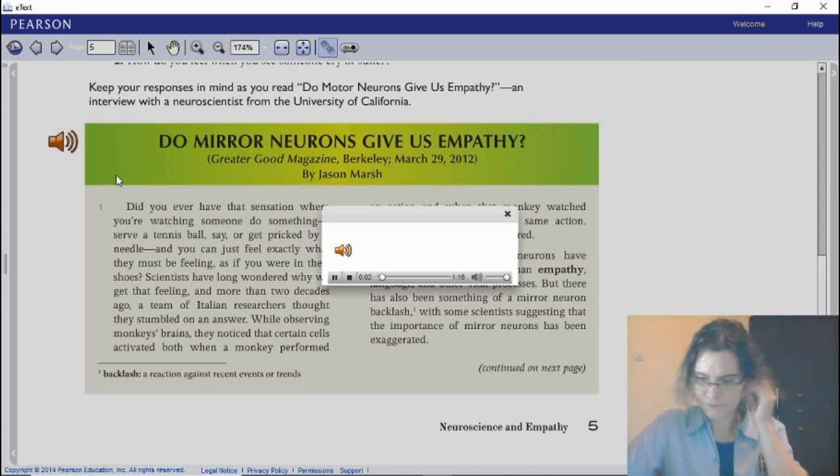Do mirror neurons give us empathy? Greater Good Magazine, Berkeley, March 29th, 2012, by Jason Marsh. Did you ever have that sensation where you're watching someone do something—serve a tennis ball, say, or get pricked by a needle—and you can just feel exactly what they must be feeling, as if you were in their shoes? Scientists have long wondered why we get that feeling. And more than two decades ago, a team of Italian researchers thought they stumbled on an answer.